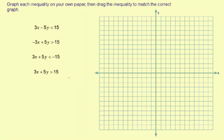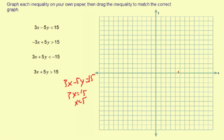What you do is graph the line given here — imagine this is an equal sign for a bit — and then shade either above or below that line. So for the first one, 3x minus 5y equals 15, we'll start by graphing that line. Using the intercept method: 3x equals 15, divide by 3, to get x equals 5. So put a dot on x equals 5.